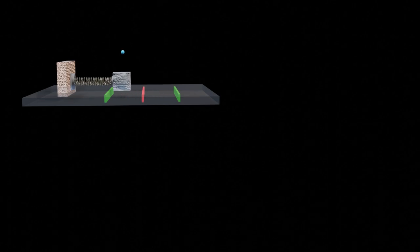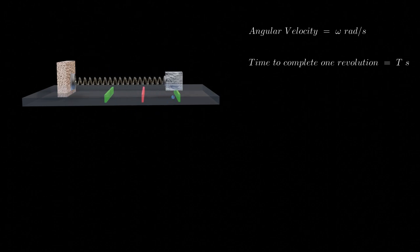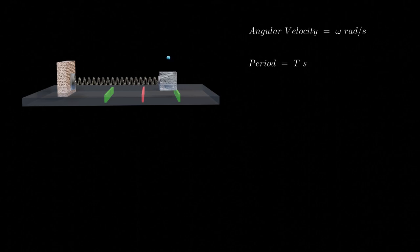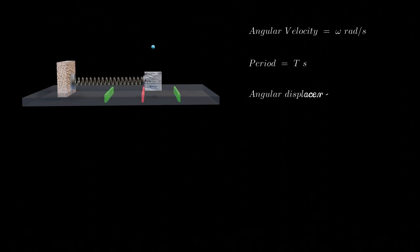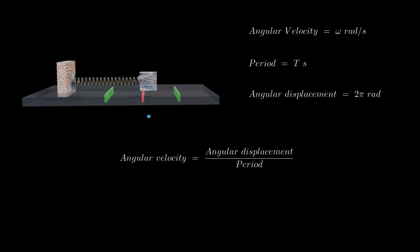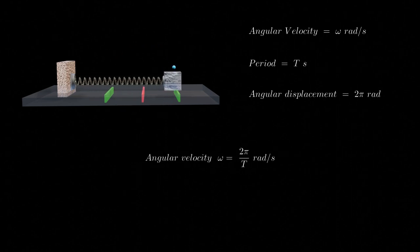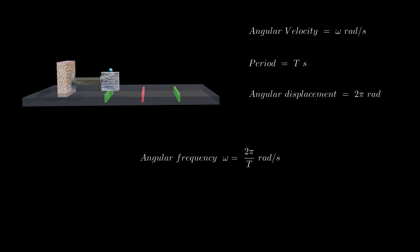Let's denote the angular velocity of the sphere as omega, measured in radians per second, and the time required to complete one revolution as T seconds — this is what we define as the period. As the sphere completes one revolution, the angle it has displaced is 360 degrees, or equivalently two pi radians — known as angular displacement. We can express the angular velocity as the angular displacement divided by the period. When we relate omega to the spring-mass system, it is termed angular frequency. Despite the terminology difference, the quantity and units remain the same.